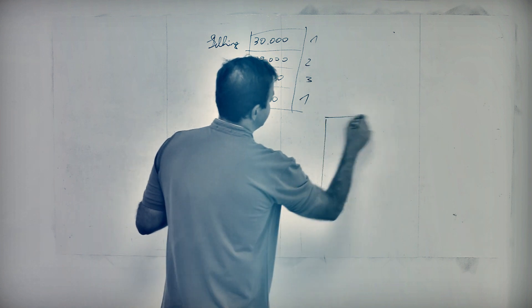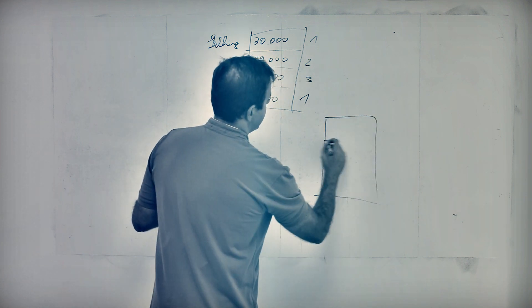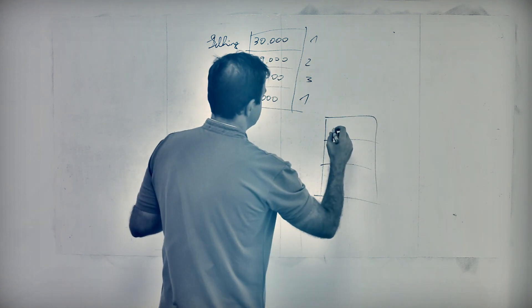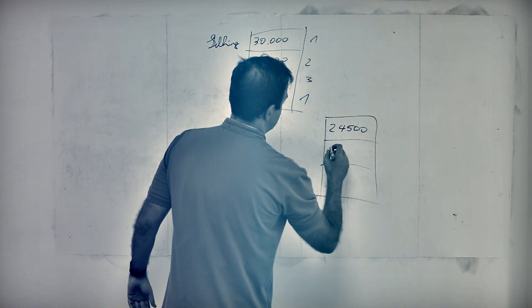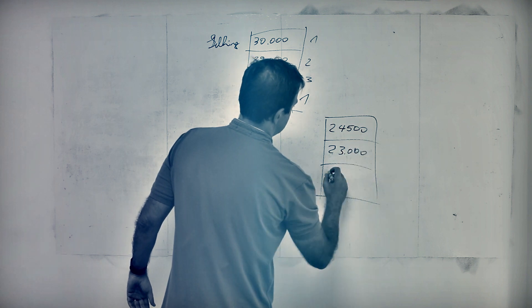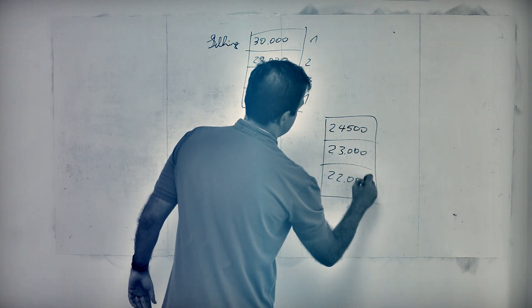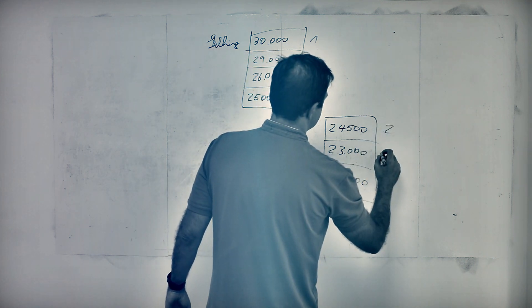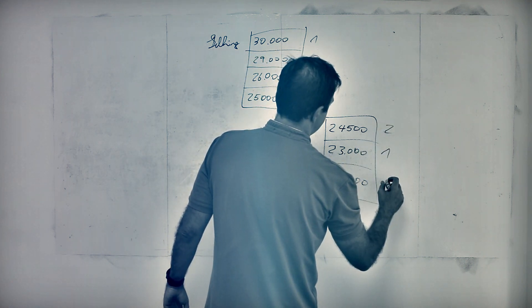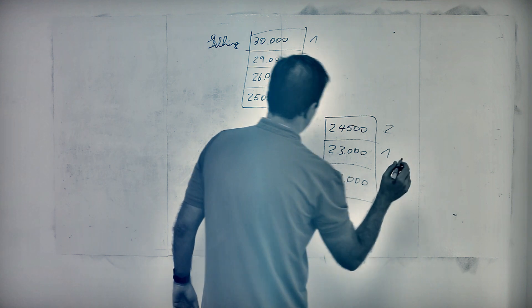And then we've got the buyers here. And again, same thing. So one guy is bidding £24,500. And that one's £23,000. And that one £22,000. And again, we've got market depth here. So this could be two cars here, there's one car and this is three.